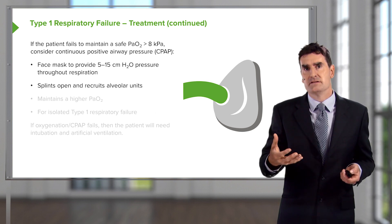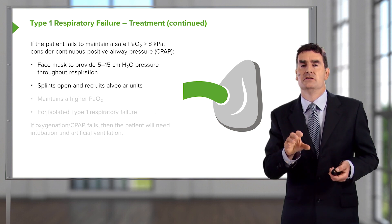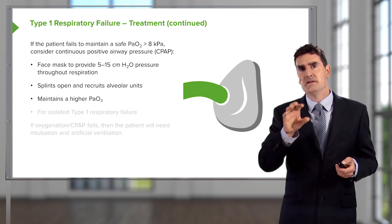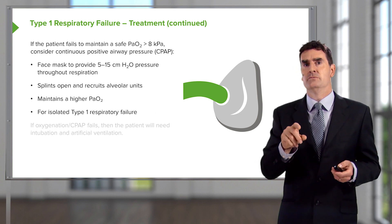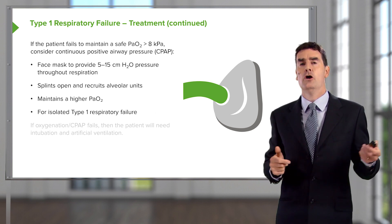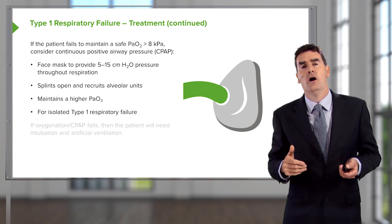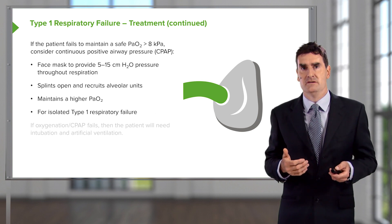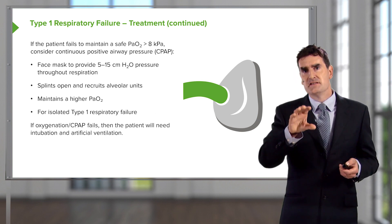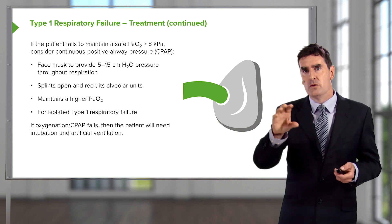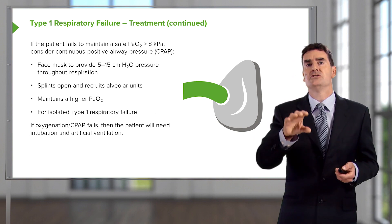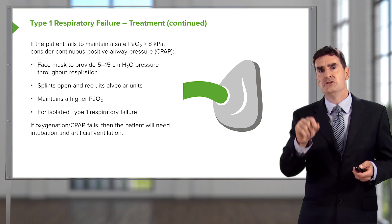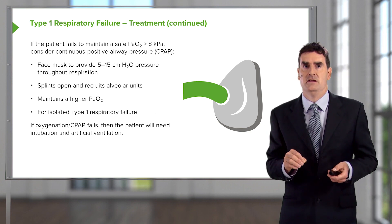CPAP splints open and recruits more alveolar units during inspiration, allowing the inhaled oxygen concentration to maintain a better arterial oxygen level. This is a good treatment for isolated type 1 respiratory failure — for example, in community-acquired pneumonia or pulmonary edema where there is no other major organ damage. If CPAP starts to fail or the patient becomes tired despite therapy, the next step is intubation, artificial ventilation, and intensive care.